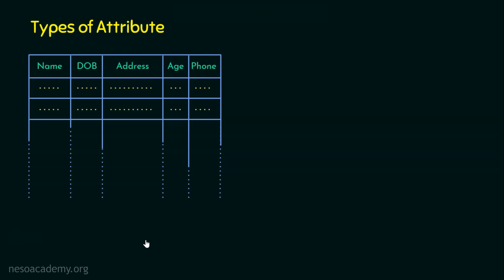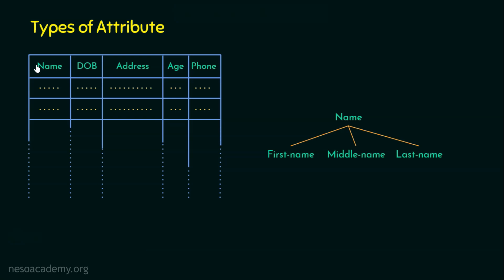Let's start with the first attribute — the name attribute. What type of attribute is this name? When we store the name value in the database, name is not a simple attribute. It is not going to contain a value which cannot be decomposed further. This name can have a first name, last name, and even a middle name. If we directly store name in the database, we need to handle it such that a record may contain only first name, or first name and last name, or first name, middle name, and last name.